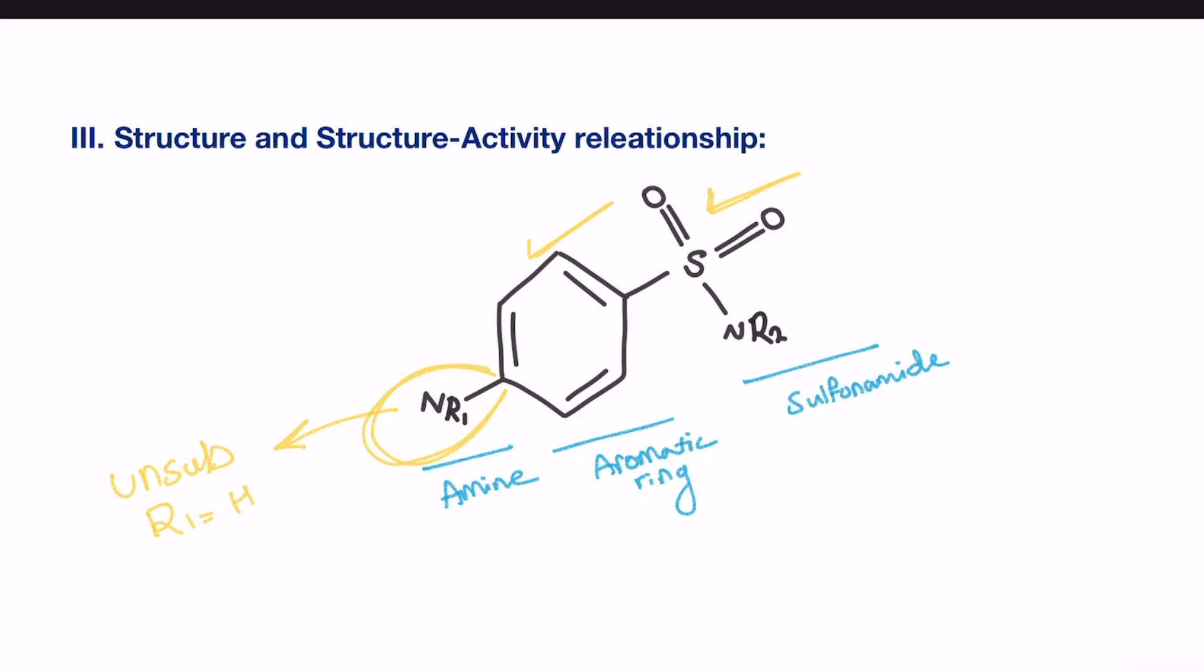The only exception is when R1 is an acyl. So this is an exception. For example, it can be an amide. Amides themselves are inactive, but can be metabolized in the body to regenerate the active form, the unsubstituted amine. So we can say that amide can be used to form sulfonamides prodrugs.